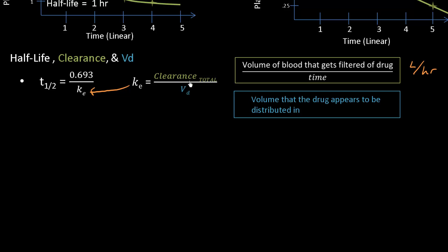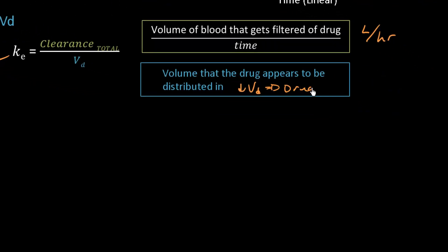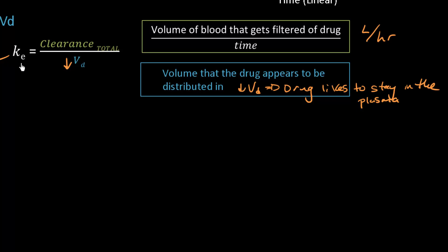Before plugging in, let's understand two key points. Increasing clearance means more blood is filtered of drug per unit time, which increases the rate of drug elimination. For volume of distribution: a low volume of distribution means the drug likes to stay in the plasma — and since a drug must be in the plasma to be eliminated, a low volume of distribution also increases the rate of drug elimination.